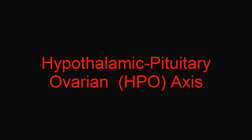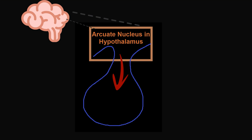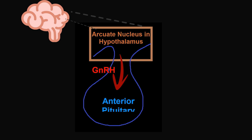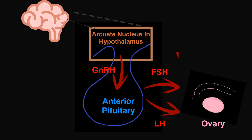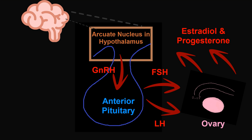Let's start our discussion with the hypothalamic pituitary ovarian, or HPO, axis. This has been quiescent throughout Tina's childhood and starts to become active during puberty. The arcuate nucleus in the hypothalamus releases GnRH, which stimulates the anterior pituitary to release the gonadotropins FSH and LH, which in turn stimulate the ovary to produce estradiol and progesterone.